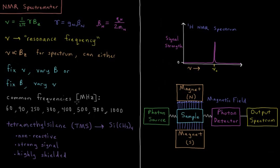Frequent NMR machines that you'll see have frequencies of 60 megahertz, 90, 250, 300, 400, 500, 700, or even 1,000 megahertz, which will be 1 gigahertz.